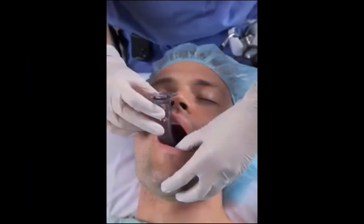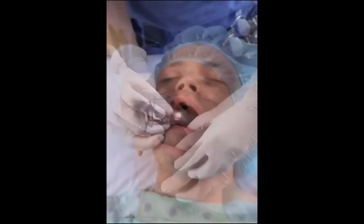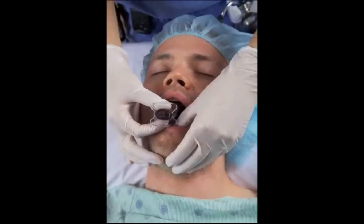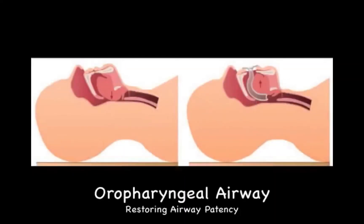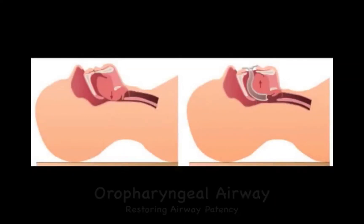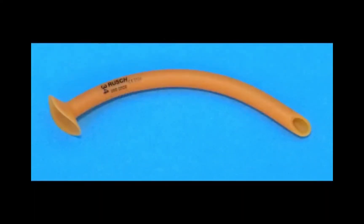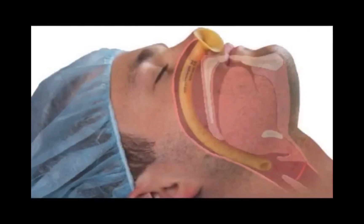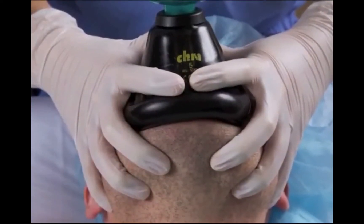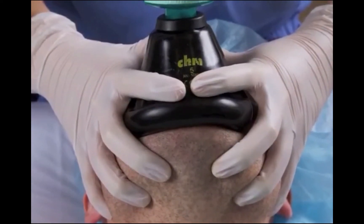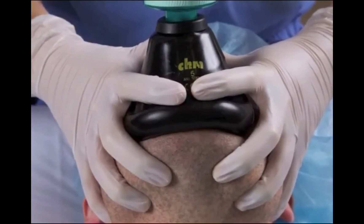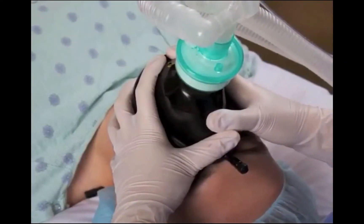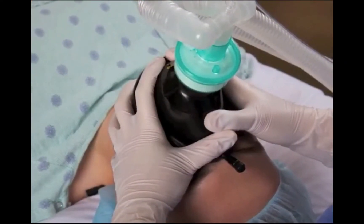An oropharyngeal airway can be inserted to lift the tongue forward and relieve any obstruction created by the patient's tongue falling backwards. A nasal airway can be used alone or with an oral airway to relieve upper airway obstruction. Occasionally, ventilation with positive pressure may be inadequate despite insertion of an oral or nasal airway. In such cases, a two-hand technique to hold the mask together with an anterior jaw thrust may be used to create a patent airway while a second healthcare provider squeezes the self-inflating bag to ventilate the patient.